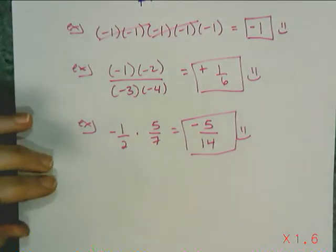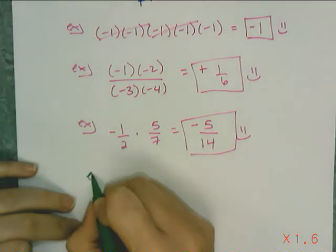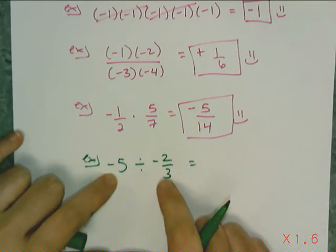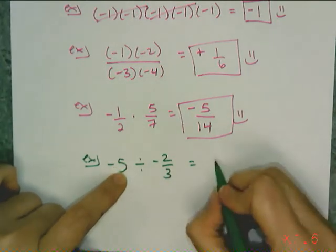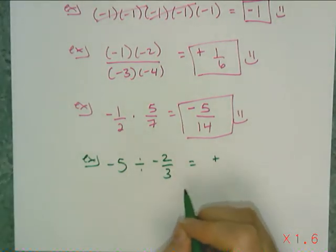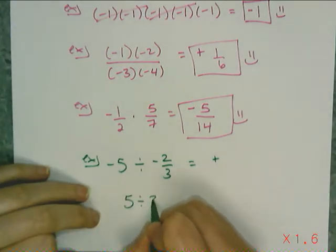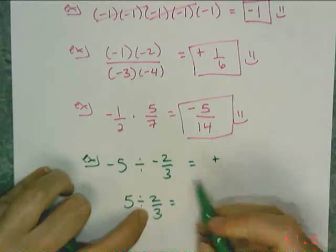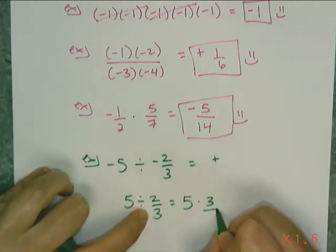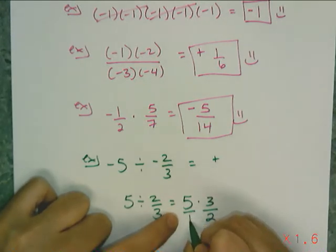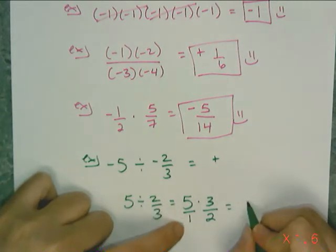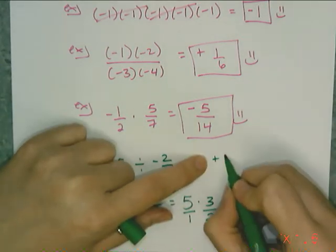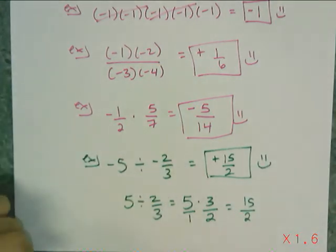It works for division too. If I have negative 5 divided by negative 2 thirds, I take care of the sign at the very beginning — a bad thing happening to a bad person is karmically good — so my final answer has to be positive. Then I divide: 5 divided by 2 thirds. Remember, division is multiplying by the reciprocal — I take the reciprocal of the second number only — so this is equivalent to 5 times 3 halves, which is 5 over 1 times 3 halves. Multiply numerator times numerator, denominator times denominator — it can't simplify — then attach the sign and box it off.